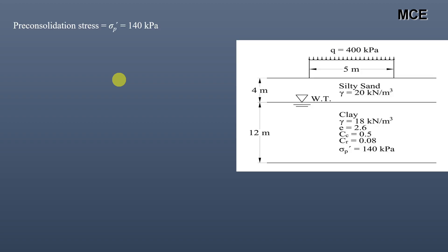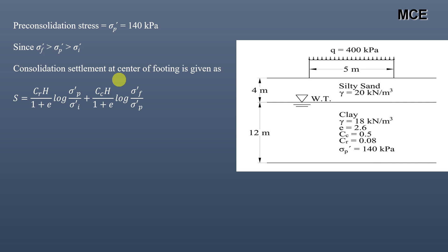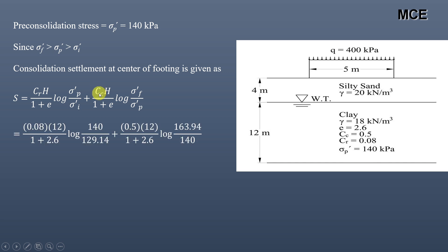The preconsolidation stress is 140 kPa. Since the final effective stress (163.94 kPa) is greater than the preconsolidation stress, which is itself greater than the initial effective stress, the consolidation settlement at the center is given by: Sc = [Cr × H / (1+e)] × log(σ′p / σ′i) + [Cc × H / (1+e)] × log(σ′f / σ′p). With Cr = 0.08, H = 12 m, e = 2.6, Cc = 0.5, this gives a settlement of 0.1236 m or 12.36 cm.